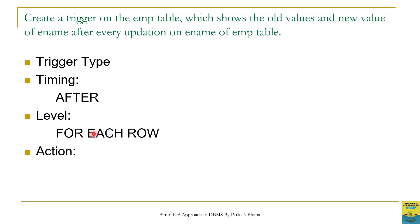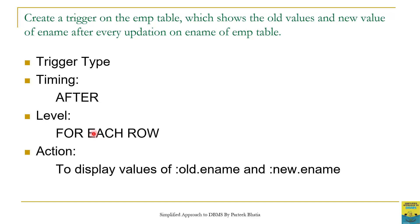Now let us give a thought about the action of this trigger. This trigger has to display both old as well as new values of ename. So its action is simple — it just has to display the value of :OLD.ename and :NEW.ename.